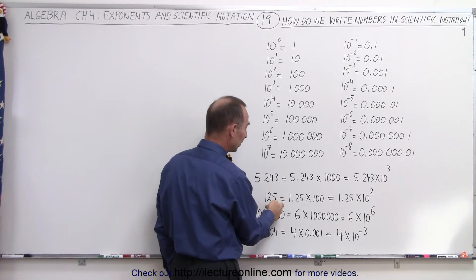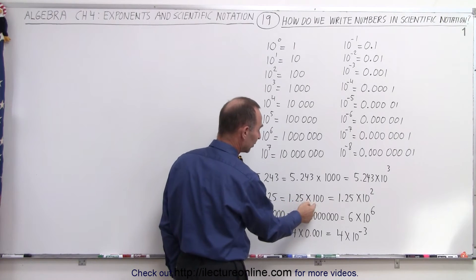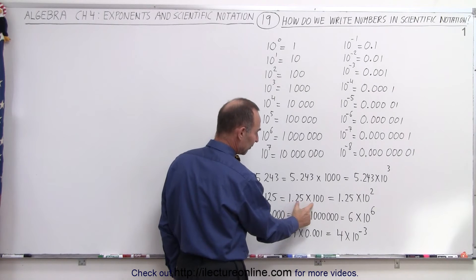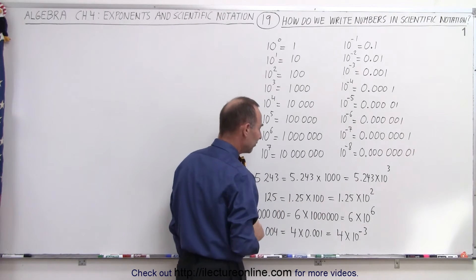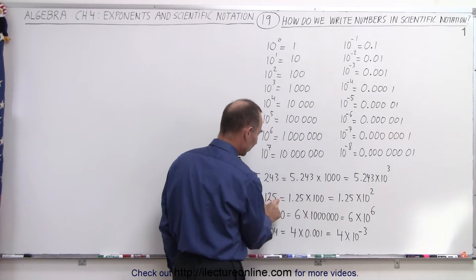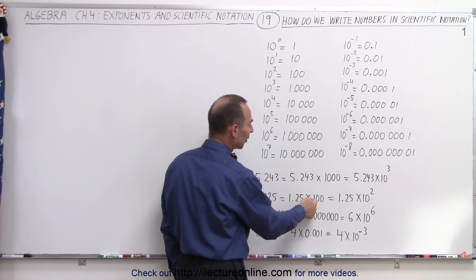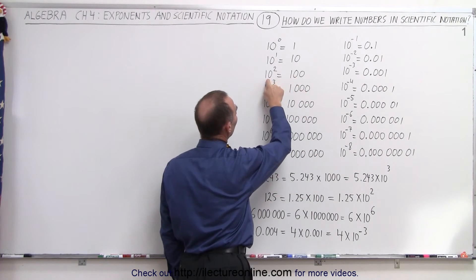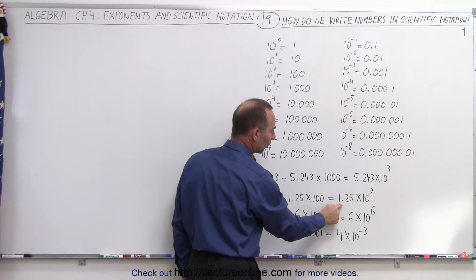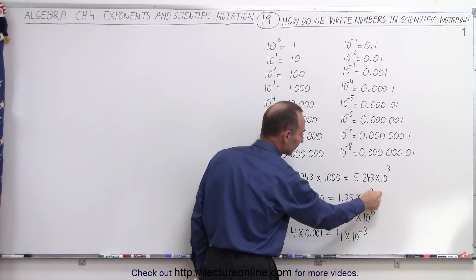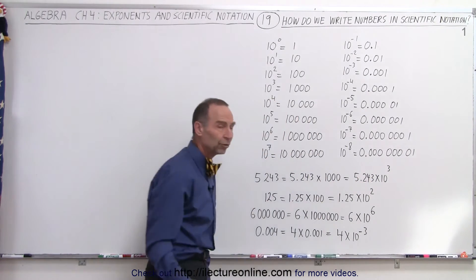The number 125 can be written as 1.25 times 100. If I multiply 1.25 times 100, I get 125 again. So this is actually the same thing as this. But instead of writing times 100, we can write 100 as being 10 to the second power. So we can write 1.25 times 10 to the second. Again, this is scientific notation.